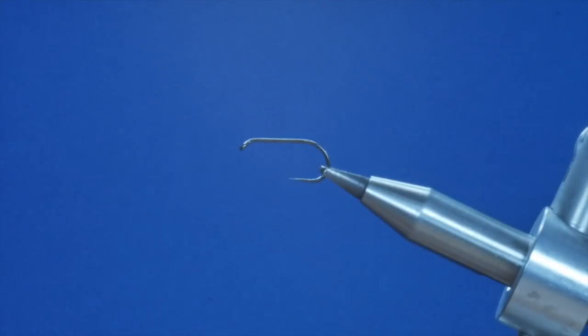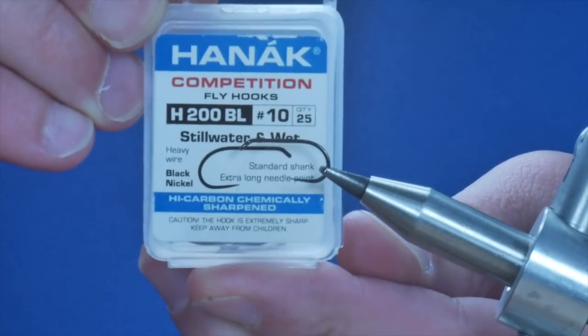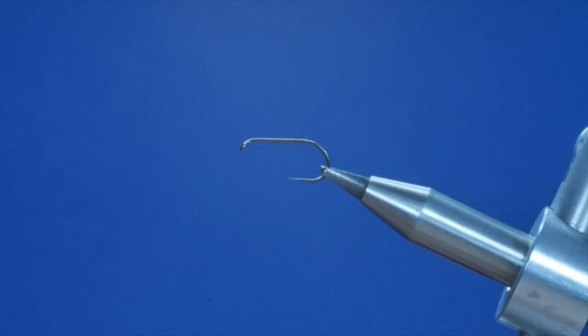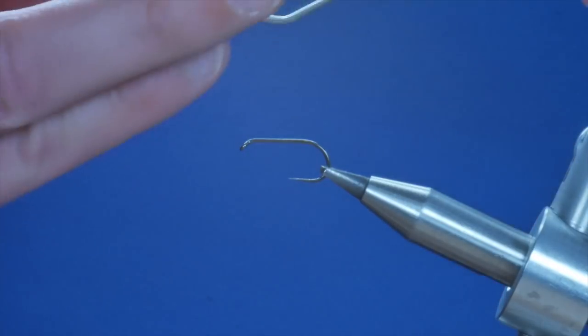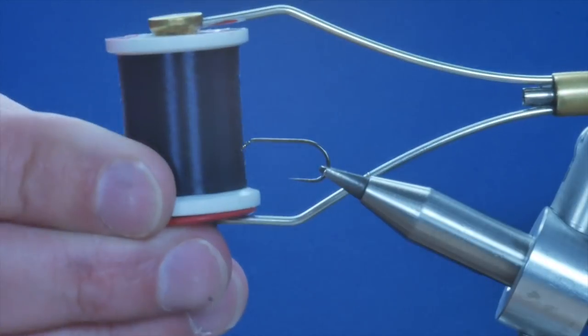Hello, thanks for joining me again. This week's stillwater pattern is a little concoction of my own. It's very loosely based on a cruncher and in the vise you see a Hanak H200 barbless hook at size 10. The thread we're going to be using today is the UTC 70 in black.